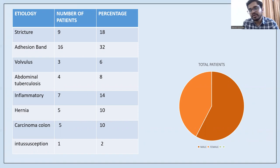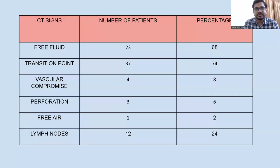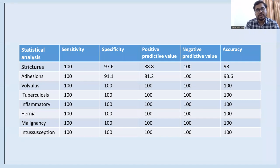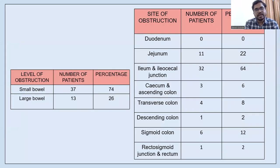Males had more cases of obstruction than females. On CT, free fluid was seen in 23 patients, transition point in 37, vascular compromise in 4, perforation in 3, free air in 1, and lymph nodes in 12 respectively. Regarding level of obstruction, small bowel obstruction was seen in 37 patients while large bowel obstruction was seen in 13 patients.